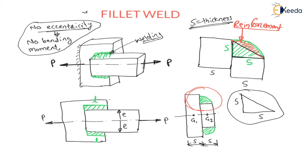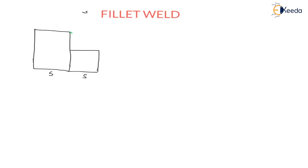Now let us go for stress calculation. This load P is acting as a shear load on the welding. We have to find the area for the shear loading. For this welding, considering the triangle, let us label it triangle ABC. The area of failure will be thickness T1 into length L of the welding.